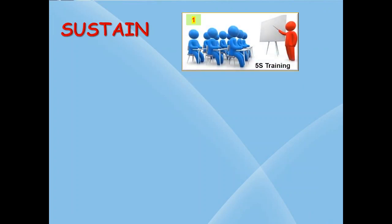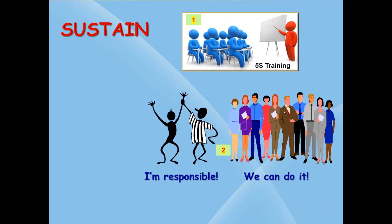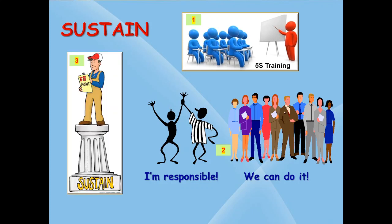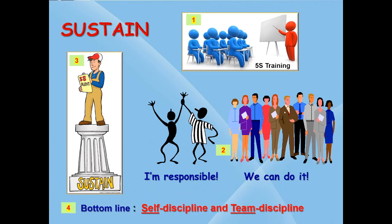This slide shows that we must first give 5S 3S training to all employees before kick-starting 5S 4S activities in the company. Make employees commit to 5S and work as a team. Conduct 5S audits for sustaining 5S concepts. Self-discipline and team discipline are a must for sustaining 5S in an organization.